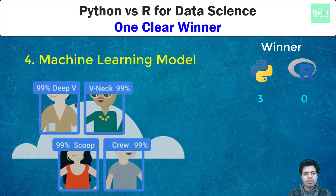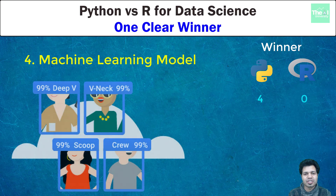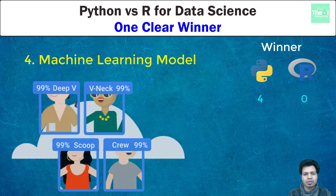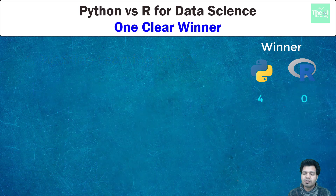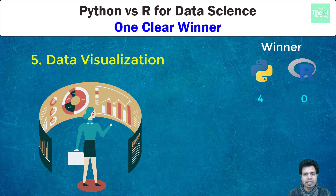The fourth parameter is data modeling. Python outperforms R here because Python is more flexible in terms of model development and deployment into production, as machine learning models in Python can be easily integrated with web applications.